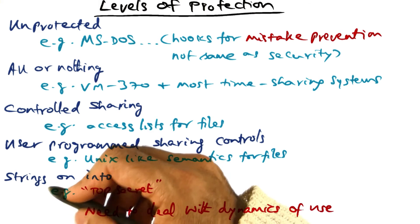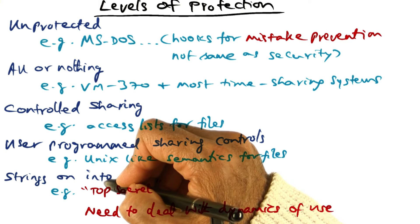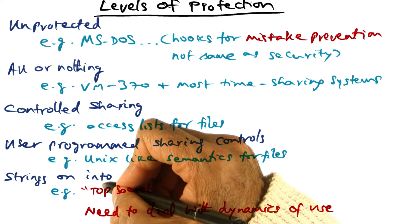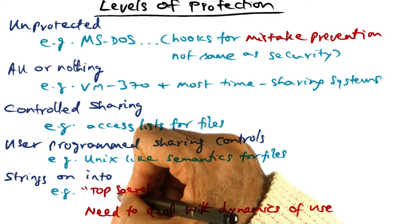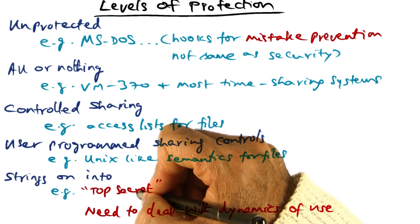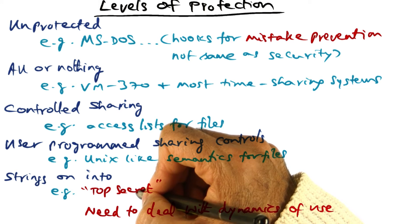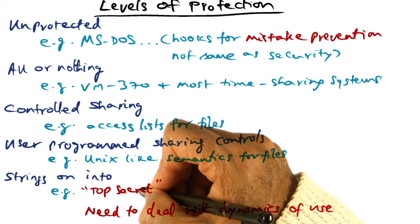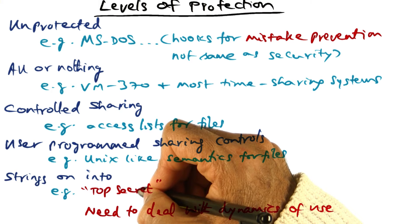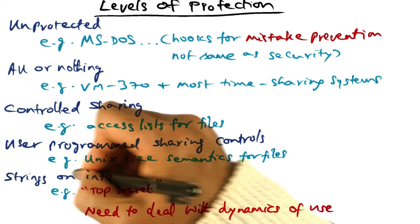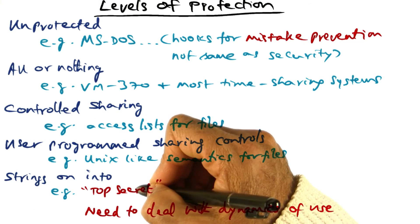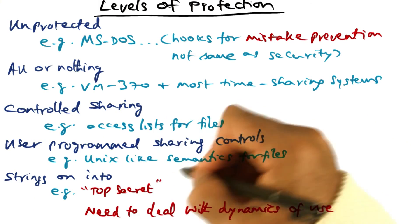Another level of protection is having user-defined strings on information. For instance, in the military it is common to have physical files labeled 'top secret' that can only be opened by a privileged set of users. Similarly, you can associate such strings on information that you create and store with the system.